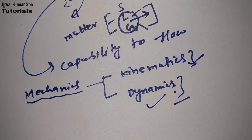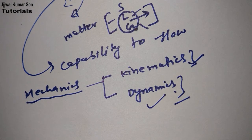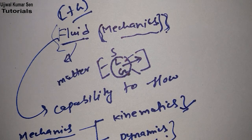The same concept applies to the motion of any object, as you may have studied in theory of machines. So, to summarize: fluid can be liquid or gas, its definition is capability to flow, matter has three types, and mechanics has two types — kinematics and dynamics.